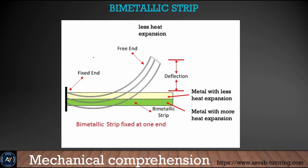Next is the bi-metallic strip, which sometimes appears in the test. Two different types of materials are sandwiched together — that's called a bi-metallic strip. The metal with less heat expansion is on top, and the metal with more heat expansion is on the bottom. When cooled, one part goes up and the strip bends in that direction.